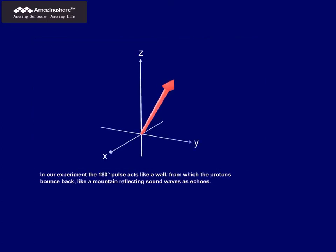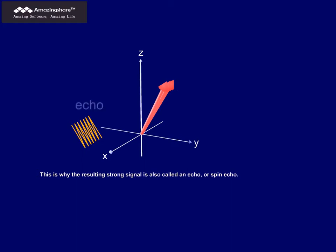In our experiment, the 180-degree pulse acts like a wall, from which the protons bounce back, like a mountain reflecting sound waves as echoes. This is why the resulting strong signal is also called an echo, or spin echo.